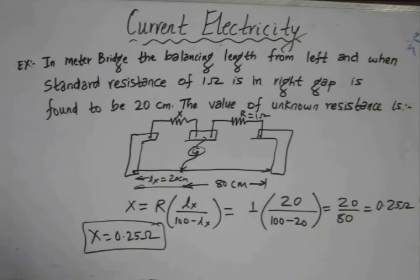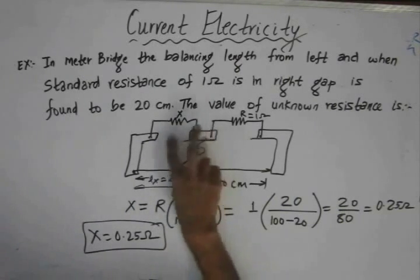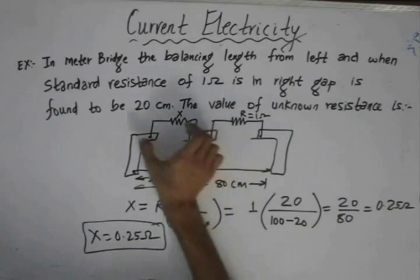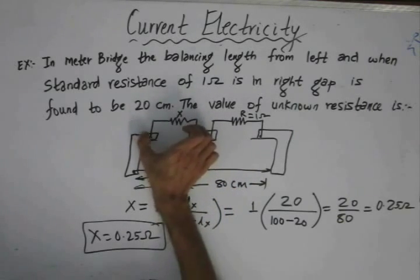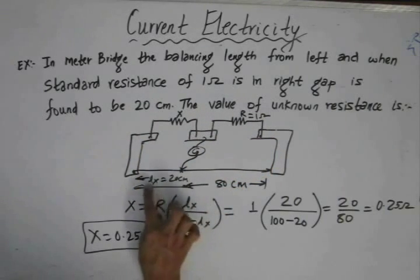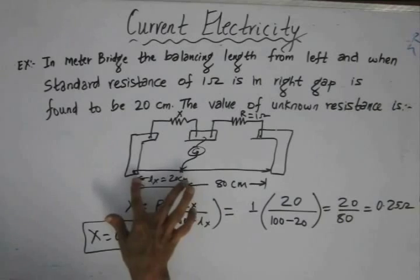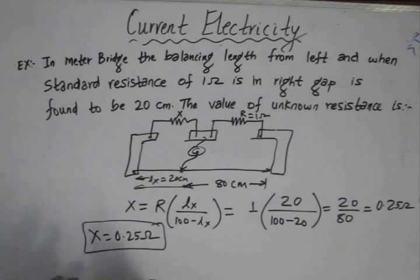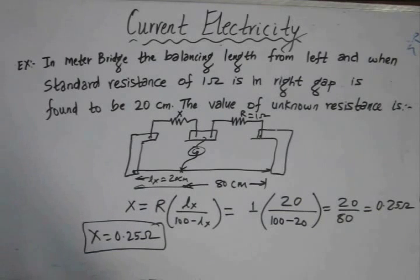From this numerical, we can see that we can determine the value of the unknown resistance. We could have got the same value if we had interchanged the standard resistance and the unknown resistance — that is, if the unknown resistor were in the right gap and the standard resistance in the left gap, the balancing lengths would simply swap: 80 centimeters and 20 centimeters respectively. Now the next thing we will study is the potentiometer.